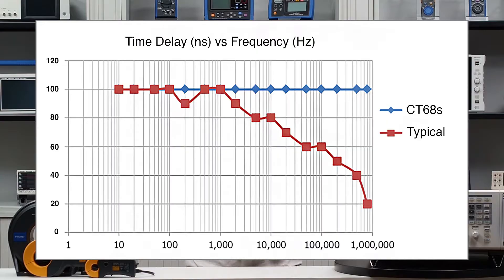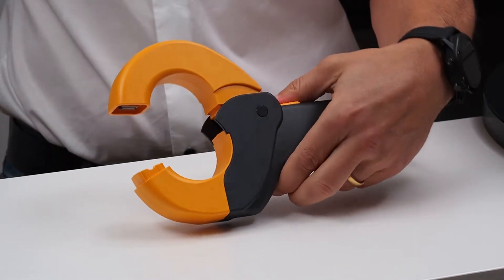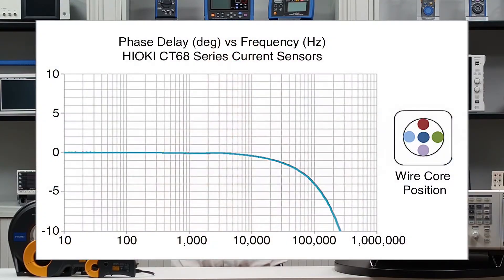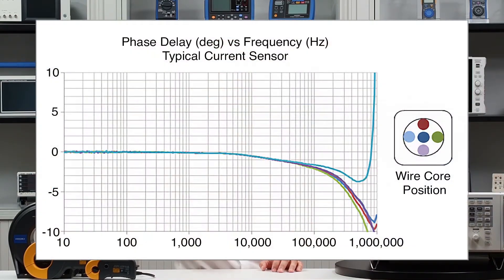Here is what would happen with a typical current sensor. A sensor where the time delay values are different depending on the frequency makes phase shift compensation in a power analyzer much more difficult — because which value do you use as your deskew parameter? Another thing that makes Hioki current sensors special is that the phase delay is not affected by where your wire core is located within the sensor during measurement. The reason you can only see one single line in the chart is that the phase delay curves for all five measurement positions are the same. Again, this is not a standard feature — typically the position of the wire core within the sensor produces results that look more like this.